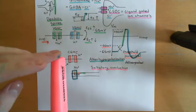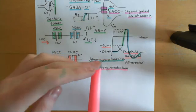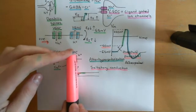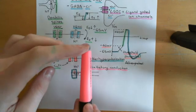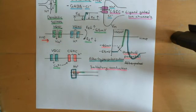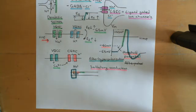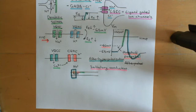Saltatory conduction is the concept that you can send a signal from one place to another by having a disturbance here cause a disturbance here, cause a disturbance here, cause a disturbance here. Saltatory conduction really is all about the domino effect — one domino toppling can cause another domino to topple, and that's a way of sending a signal between two points. There are many other examples of saltatory conduction in biology, such as calcium wave propagation intracellularly.